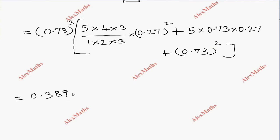Now we calculate. 0.73 cubed equals 0.389. In the bracket, 10 times 0.27 squared: 0.27 squared equals 0.0729, times 10 equals 0.729. Plus the next value.